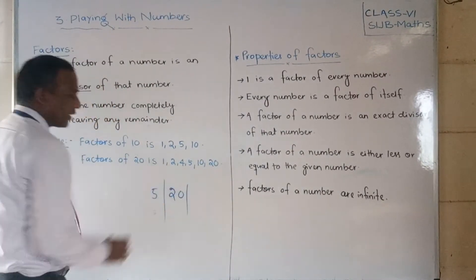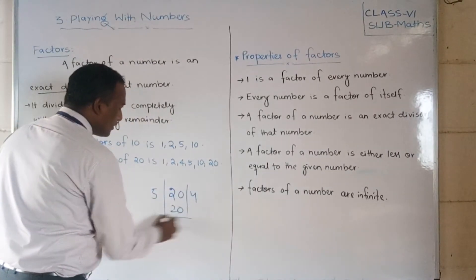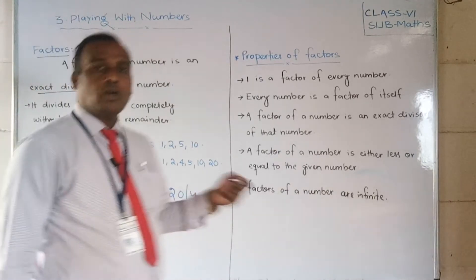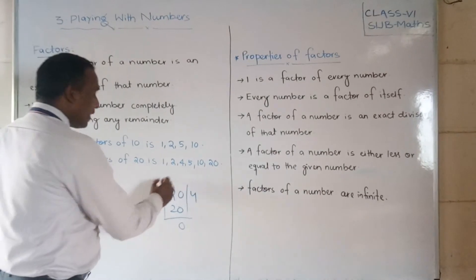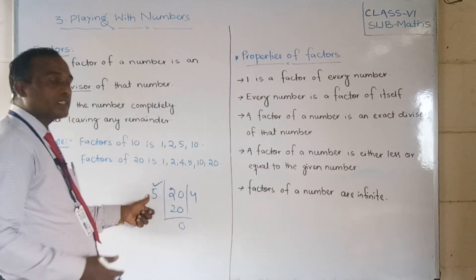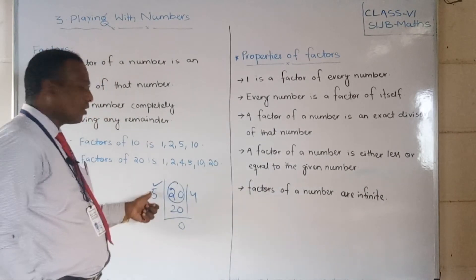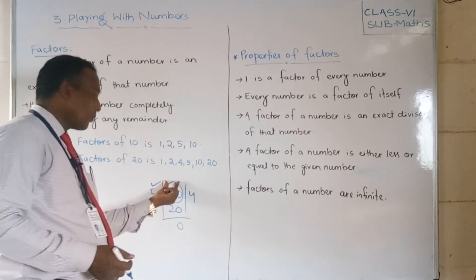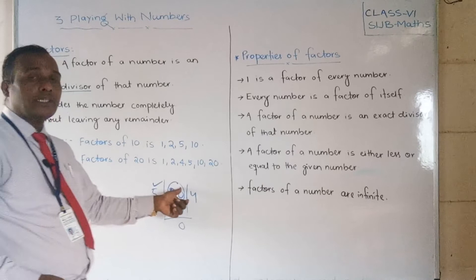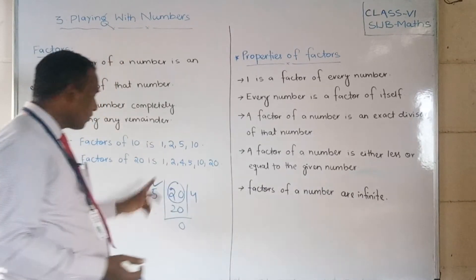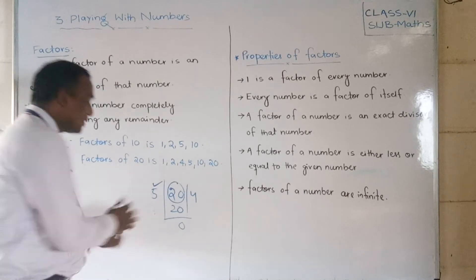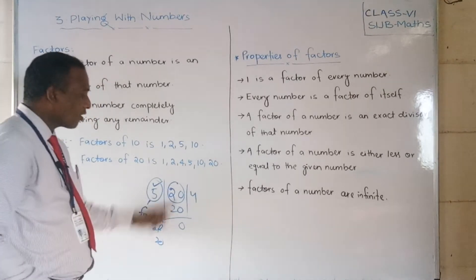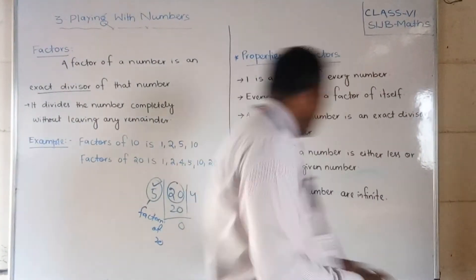For example: 20 divided by 5 equals 4, and the remainder is zero. That means 20 is exactly divisible by 5 — there is no remainder. So 5 is called a factor of 20. If the remainder is zero when dividing, then the divisor is called a factor of that given number.